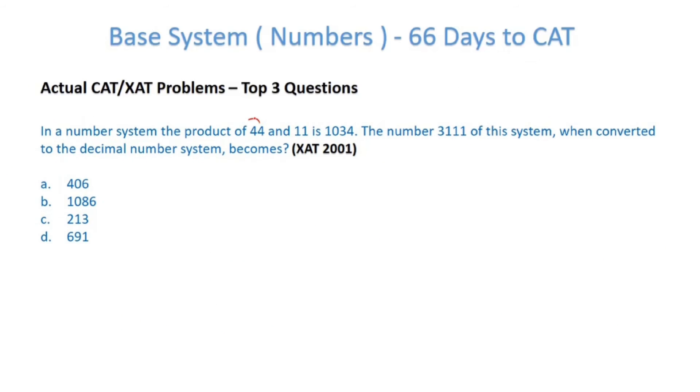In a number system, the product of 44 and 11 is 1034. We've seen in the last part how to perform products. So 44×11 = 1034 in some base system. I don't know the base, so I have to find it and convert this number to decimal.